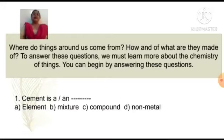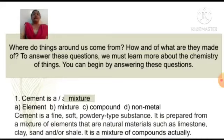Question 1. Cement is a: Option A element, Option B mixture, Option C compound, Option D non-metal. Answer is Option B mixture. Cement is a fine soft powdery type substance. It is prepared from a mixture of elements that are natural materials such as limestone, clay, sand and/or shale. It is a mixture of compounds actually.